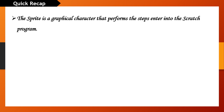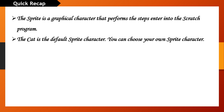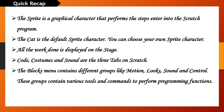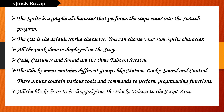Quick recap. The sprite is a graphical character that performs the steps centered into the Scratch program. The cat is the default sprite character, but you can choose your own. All the work done is displayed on the stage. Code, Costumes, and Sound are the three tabs on Scratch. The blocks menu contains different groups like Motion, Looks, Sound, and Control. These groups contain various tools and commands to perform programming functions. All the blocks have to be dragged from the blocks palette to the script area.